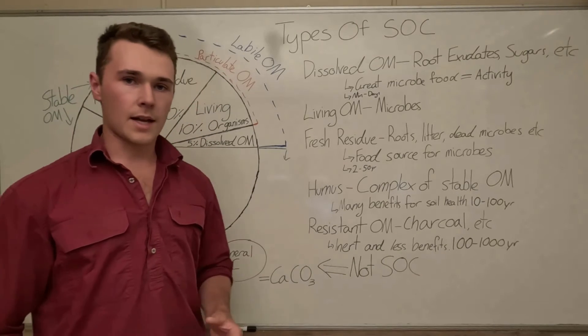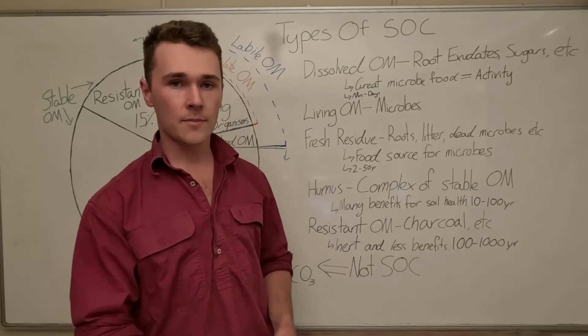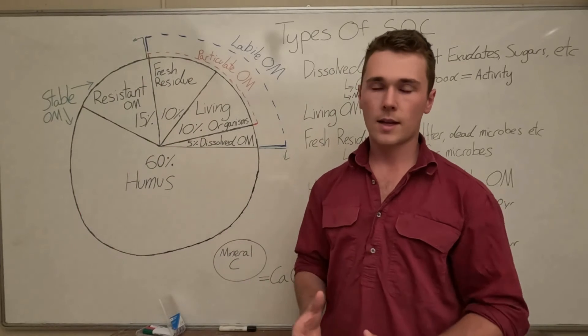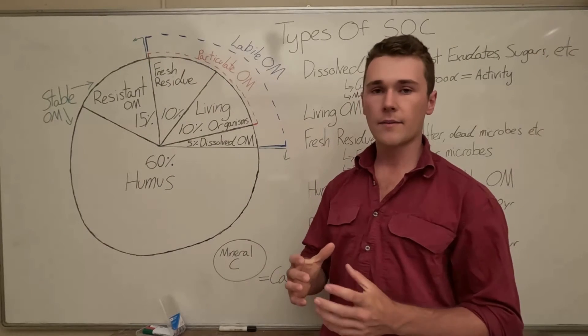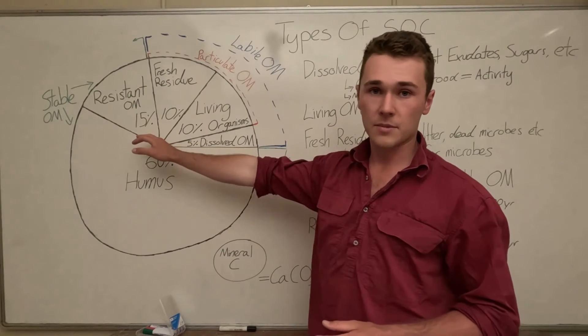Now finally we have resistant organic matter this can be things like charcoal or biochar and this is really inert pieces of carbon so it doesn't have as many benefits as humus and only makes up around 15 percent of our soil.